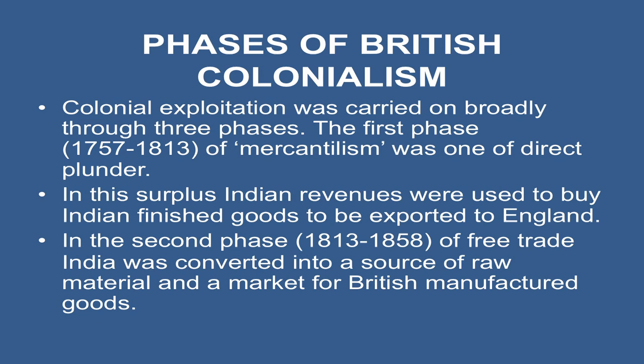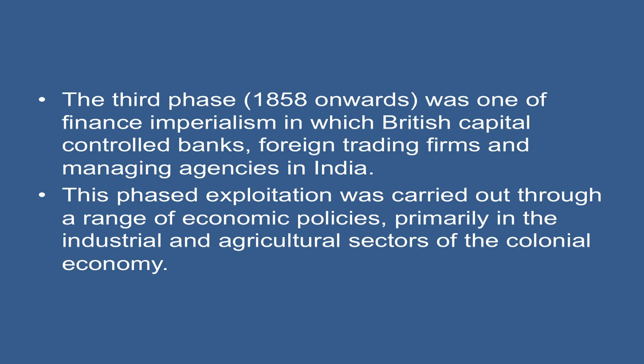The first phase, from 1757 to 1813, was one of mercantilism and direct plunder. In this phase, surplus Indian revenues were used to buy Indian finished goods to be exported to England. In the second phase, between 1813 to 1858, of free trade, India was converted into a source of raw material and a market for British manufactured goods. The third phase, from 1858 onwards, was one of finance imperialism, in which British capital controlled banks, foreign trading firms, and managing agencies in India.